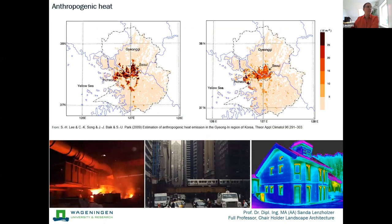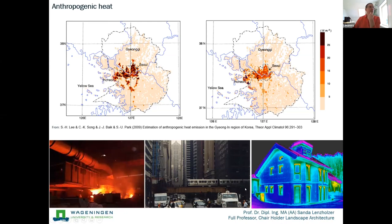It's also important to understand that since mainly the industrial revolution, humans have also altered the thermal system of the city due to combustion processes — for instance, industry that emits a lot of heat, and very importantly, all kinds of traffic.